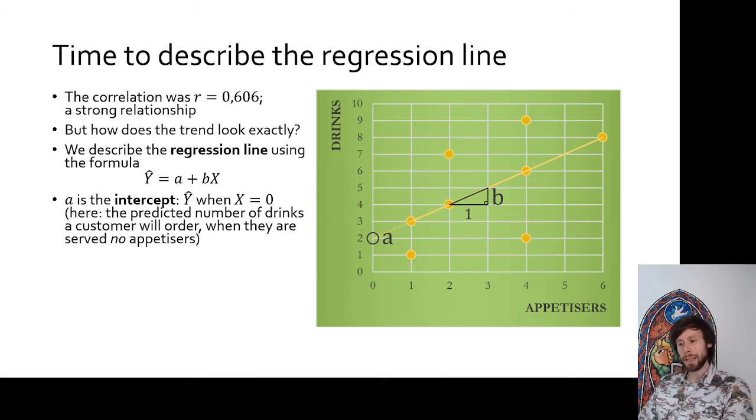Mathematically, then it's always the point where x will be zero, right? Because if you are at the y-axis, this is a situation where no appetizers are served to our customer. So what does the intercept then express? It expresses how many drinks we expect a customer of this kind to order. The predicted number of drinks the customer will order if they are not served any appetizers.